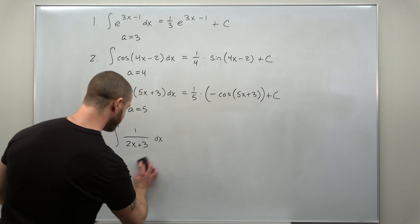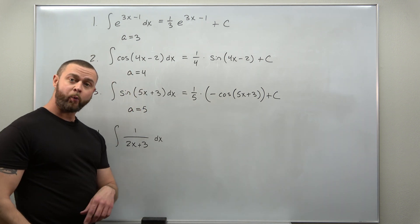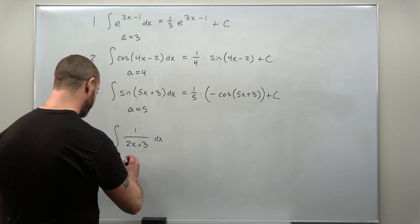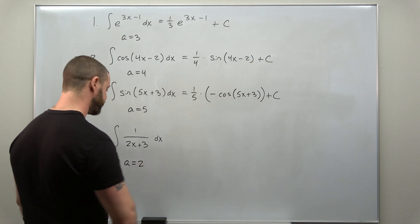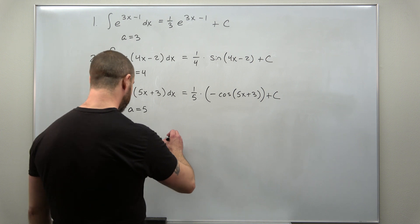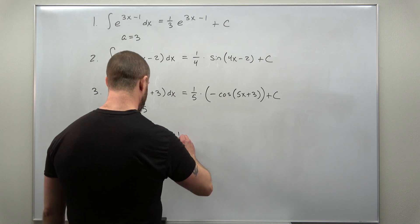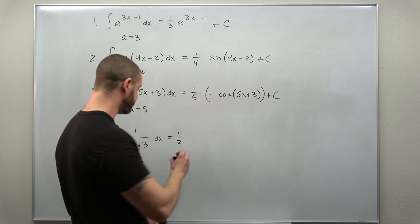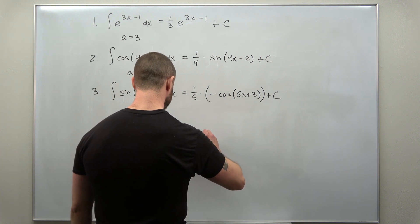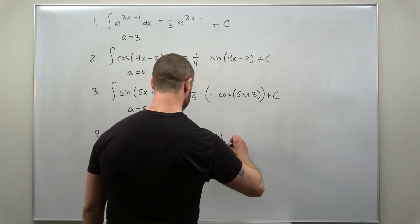All right, so with that we apply the 1 over a shortcut. Identify the value of a in the linear expression which is 2, our antiderivative, 1 over a, 1 over 2, and then times your basic antiderivative.